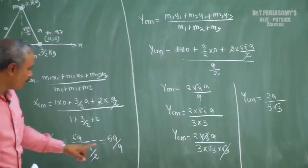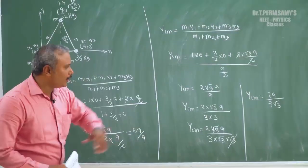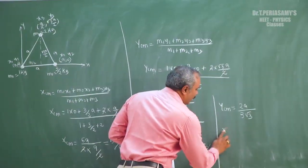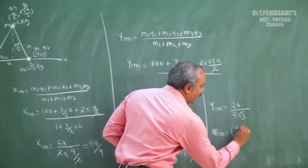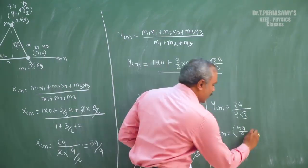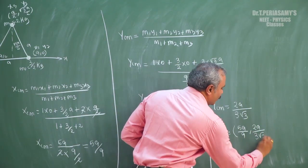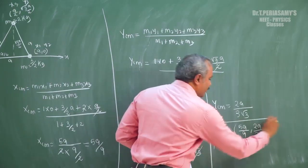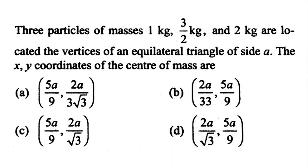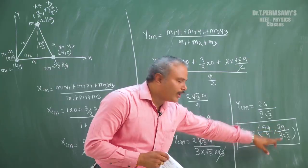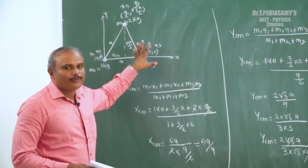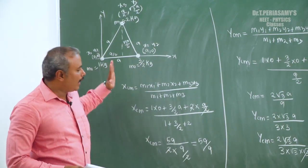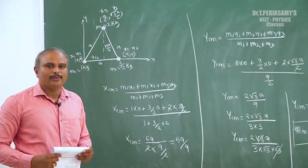So the total center of mass is (5a/9, 2a/(3√3)). To summarize: first fix the coordinate system, then fix the masses, then apply the center of mass formula, and you can solve it easily.